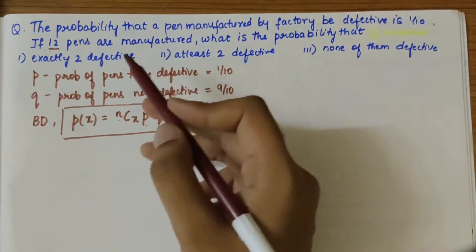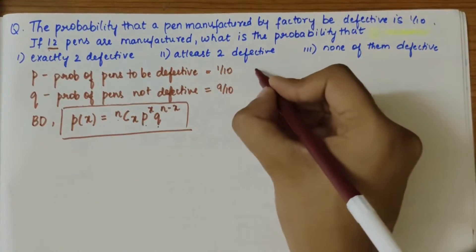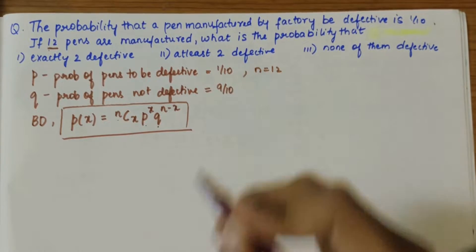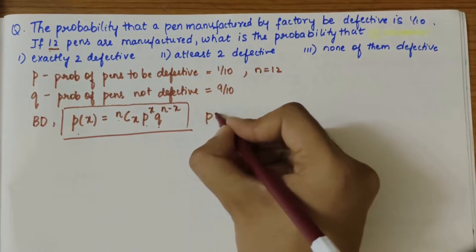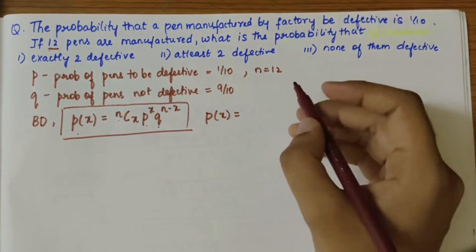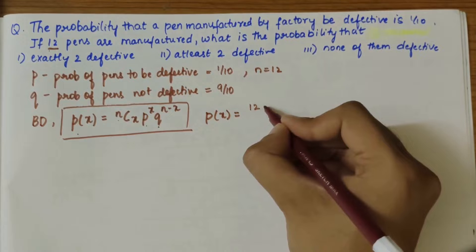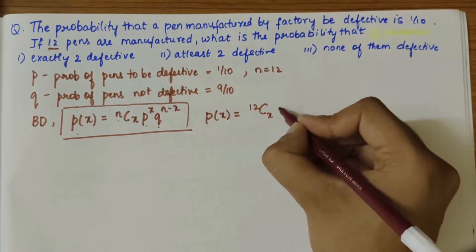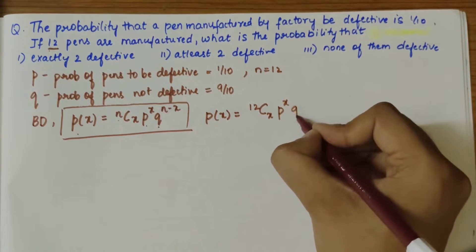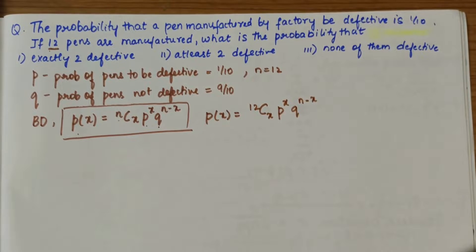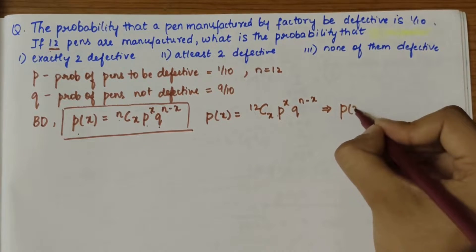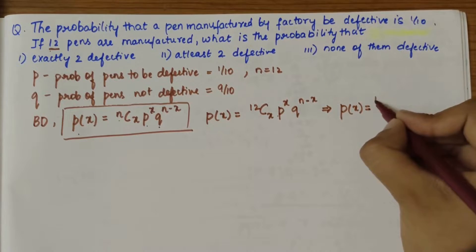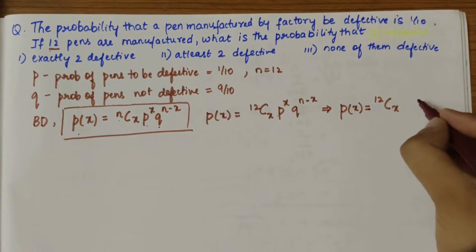So n is equal to 12. This equation can be rewritten as P(X) = 12Cx P^x Q^(n-x). Here P and Q, let's substitute it. It will become P(X) = 12Cx times P value is 1/10.